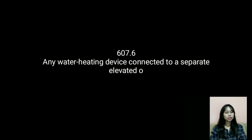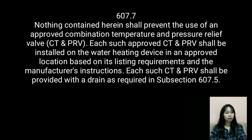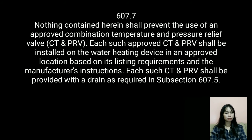Section 607.6: Any water heating device connected to a separate elevated or pressure-type storage tank and having valves between said heater and tank shall be provided with an approved water pressure relief valve. Section 607.7: Nothing contained herein shall prevent the use of an approved combination temperature and pressure relief valve (CT&PRV). Each such approved CT&PRV shall be installed on the water heating device in an approved location based on its listing requirements and the manufacturer's instructions, and shall be provided with a drain as required in Section 607.5.